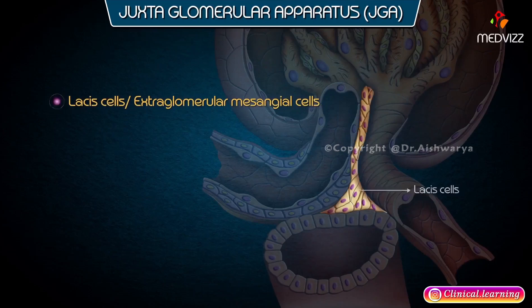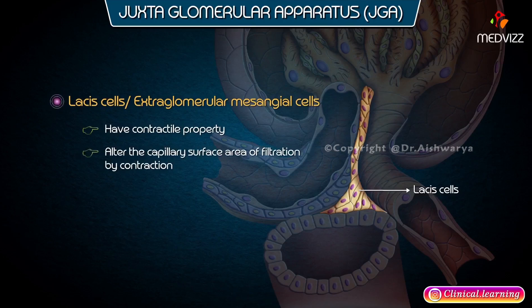Lasses cells, or extraglomerular mesangial cells, have a contractile property. They alter the capillary surface area of filtration by contraction.